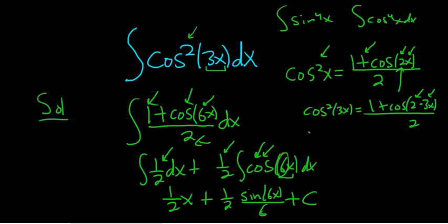You can always do that when it's cosine of bx dx. You can just integrate and divide by b. The final answer is 1 half x plus 1 twelfth sine of 6x. And then don't forget the plus c.